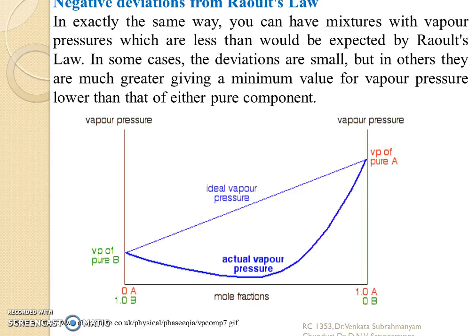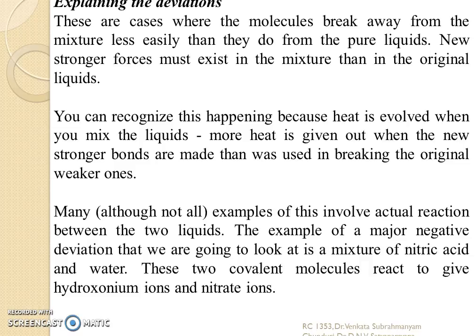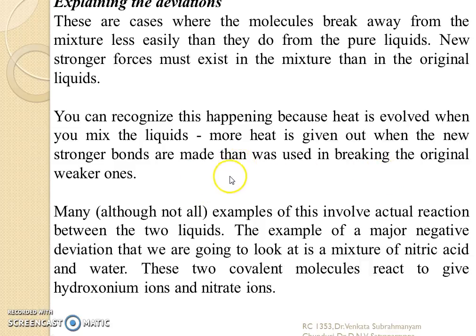Negative deviation from Raoult's law: if the mixture vapor pressure is less than the vapor pressure according to Raoult's law, then these curves are called negative deviation azeotropes. In these cases, the molecules break away from the liquid mixture less easily than they do from the pure liquid, because new stronger forces must exist in the mixture than in the original liquid. You can recognize this because heat is evolved when you mix these liquids — more heat is given out when the new stronger bonds are made than was used in breaking the original bonds.